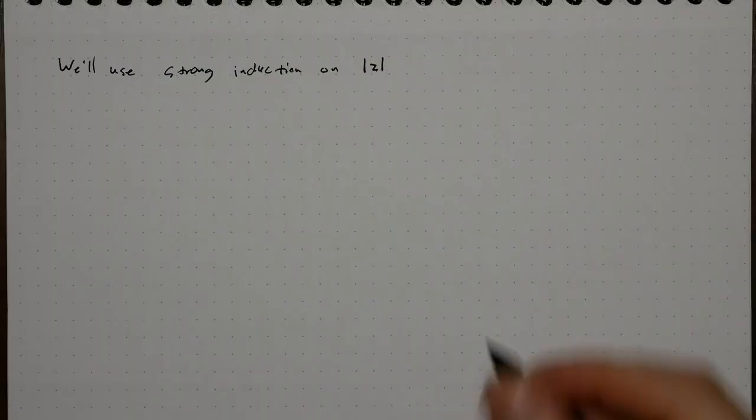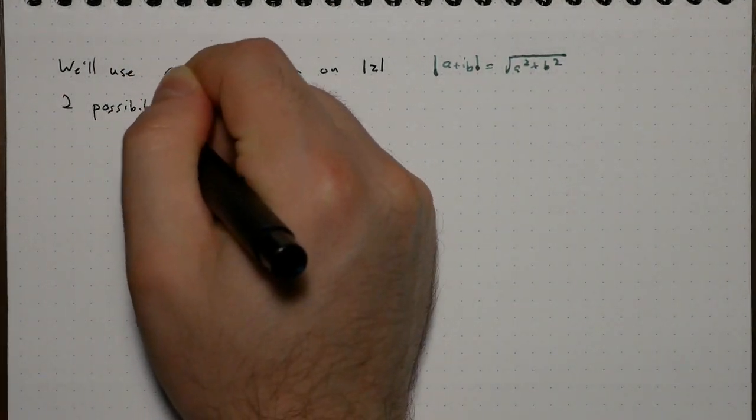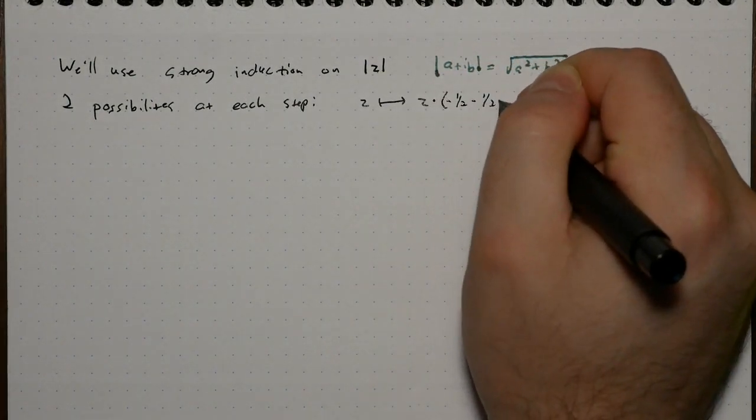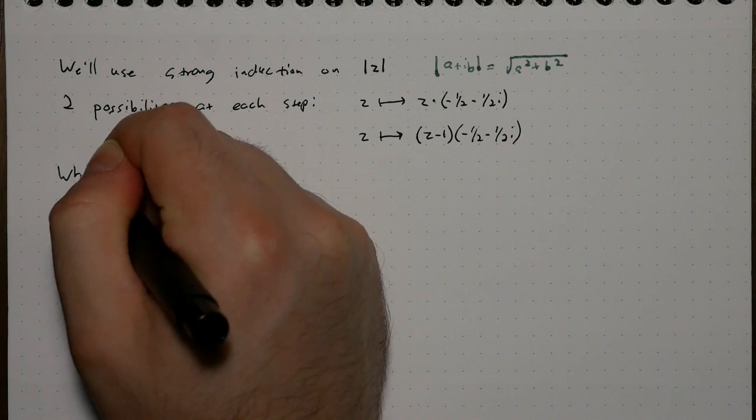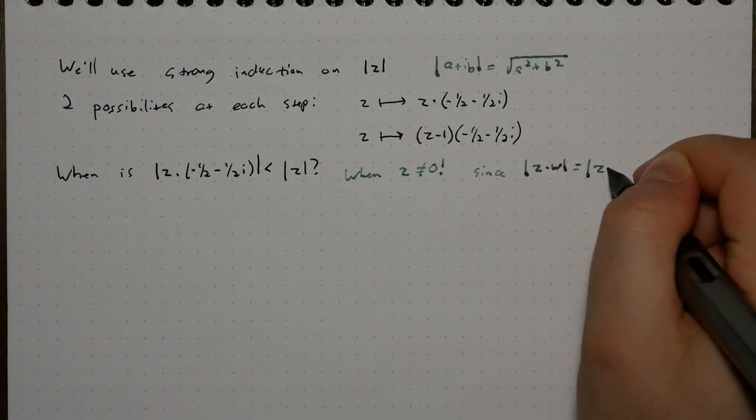Strong induction on the norm of complex number. There are two possibilities at each step. Either we just multiply by negative 1 half minus 1 half i, or we subtract 1 first. When does multiplication by negative 1 half minus 1 half i reduce the norm? Always, unless z is equal to 0.